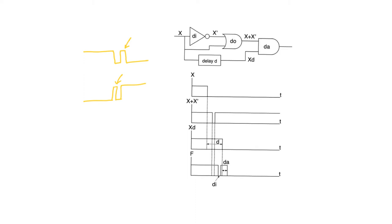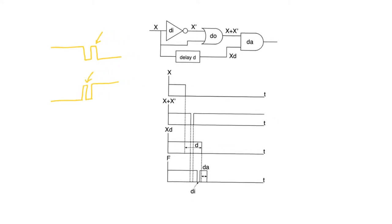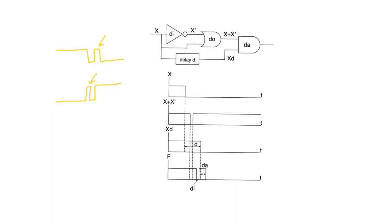A dynamic hazard, on the other hand, occurs when a logic value has more than two paths — at least three paths — through the circuit. So a dynamic hazard might occur if a specific logic variable has three paths through a logic circuit. In this case, you can see the variable X has three paths through the logic circuit.